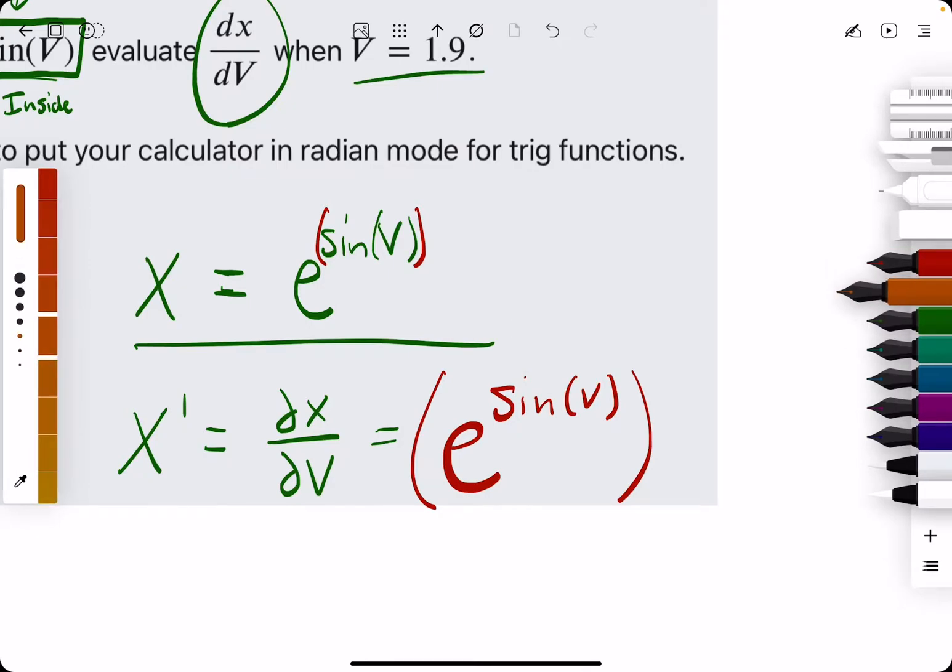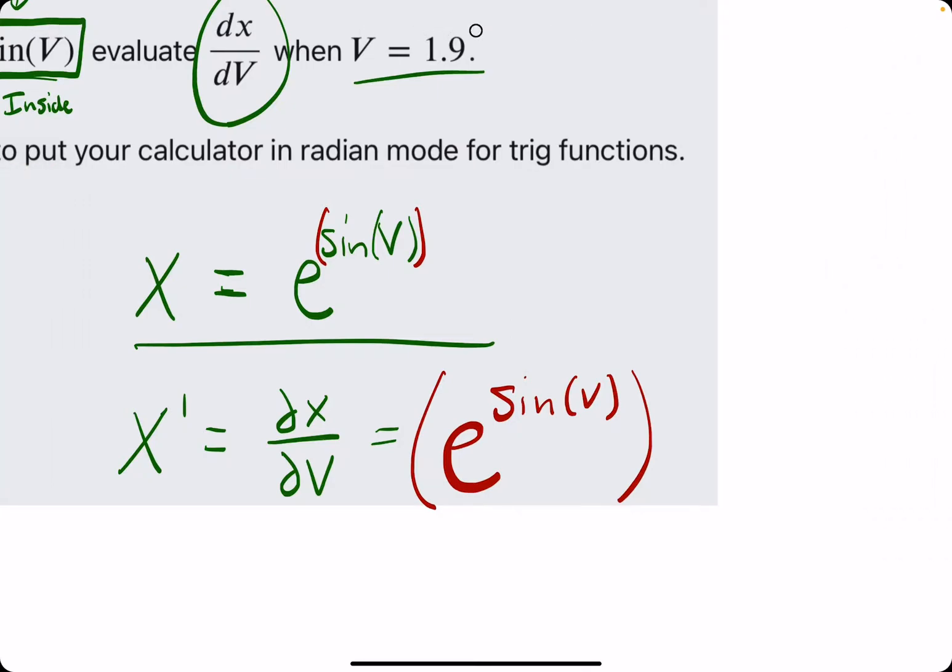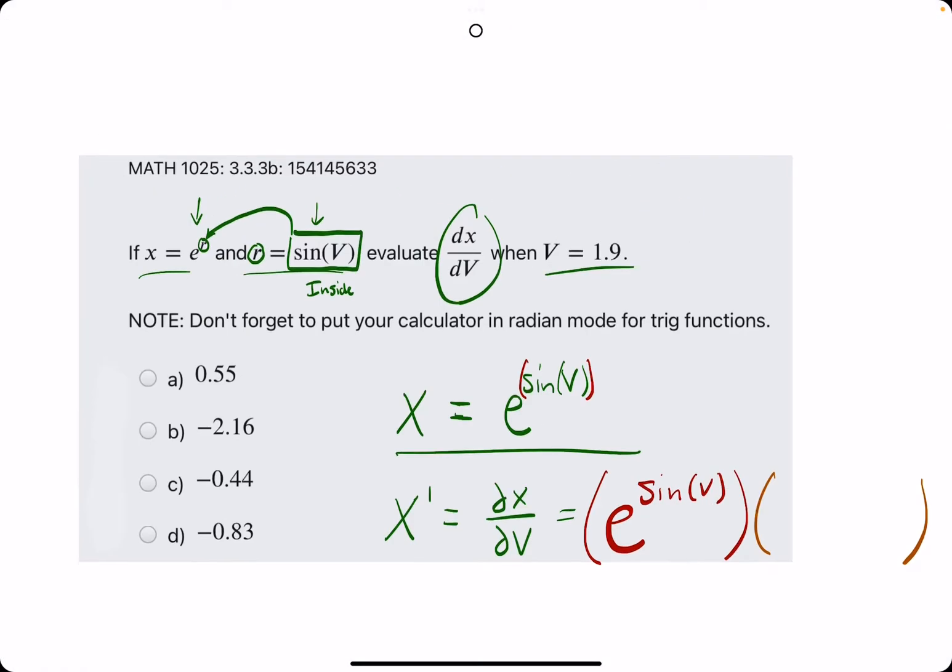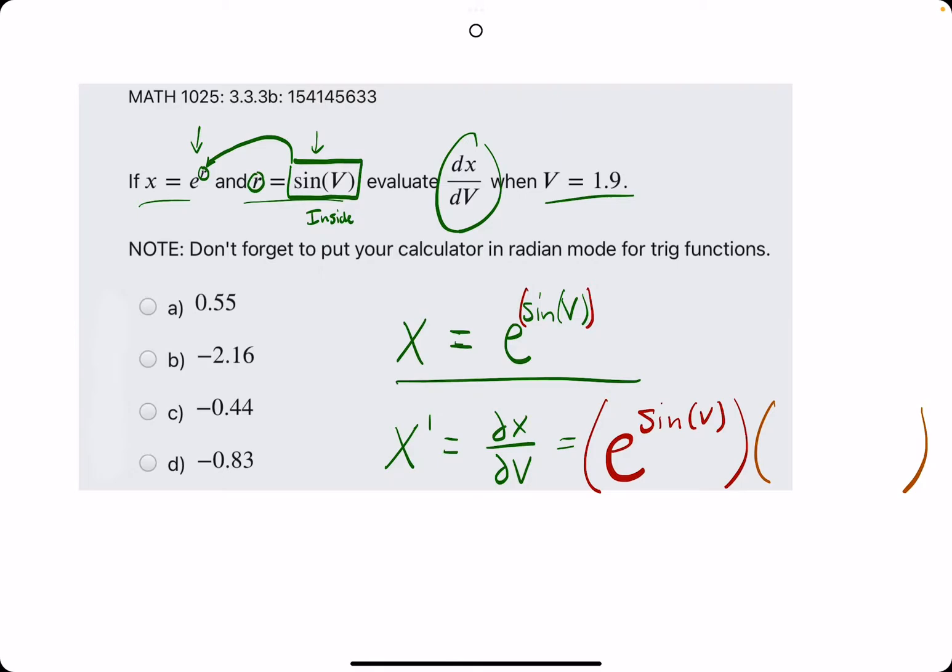Derivative of the outside, e to the sine of v. Now, what's the derivative of the inside? What is the inside? We said the inside piece was sine of v. So, the derivative of sine of v is cosine of v. And that's it. This is dx over dv.